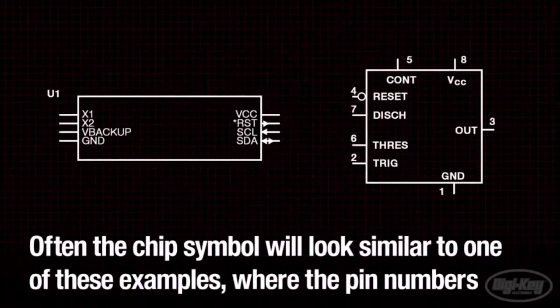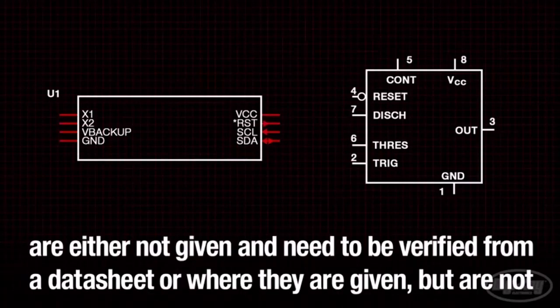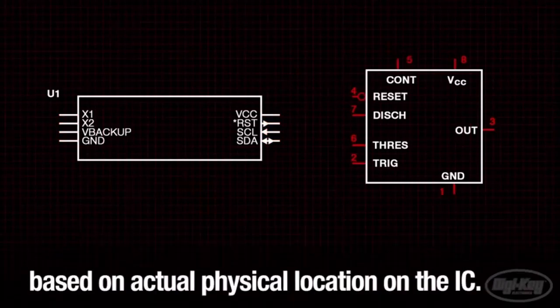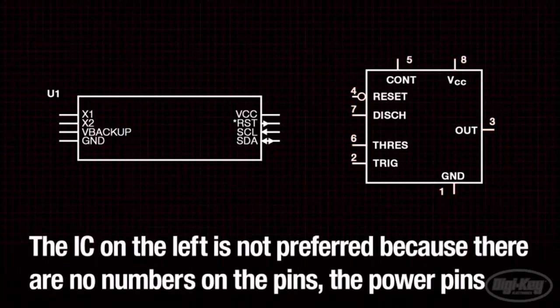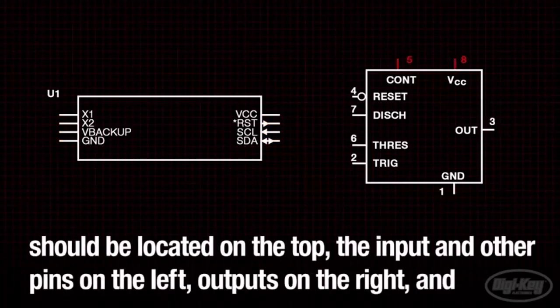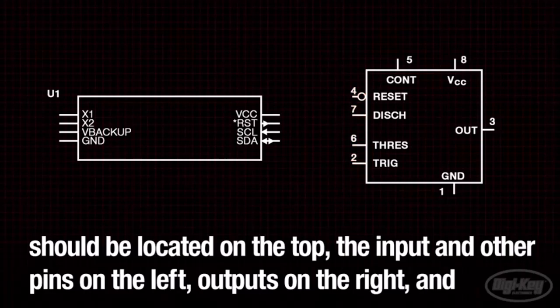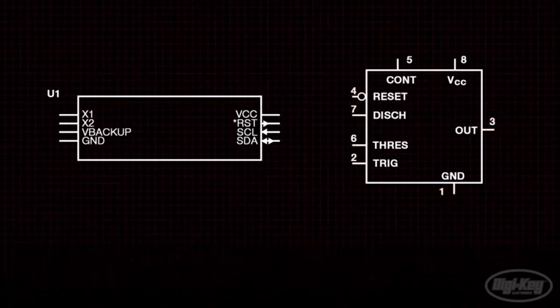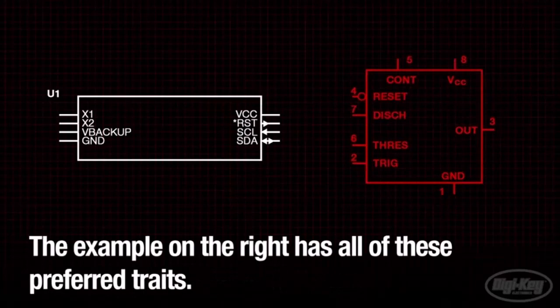Often the chip symbol will look similar to one of these examples where the pin numbers are either not given and need to be verified from a data sheet, or where they are given but are not based on actual physical location on the IC. The IC on the left is not preferred because there are no numbers on the pins. The power pins should be located on the top, the input and other pins on the left, outputs on the right, and ground and negative on the bottom. The example on the right has all of these preferred traits.